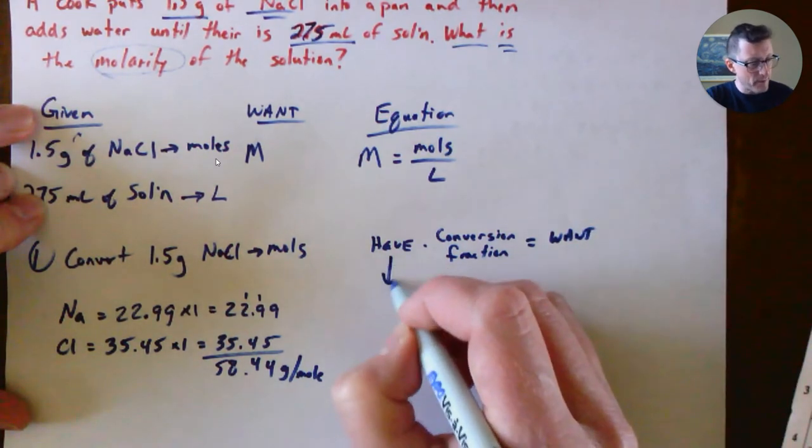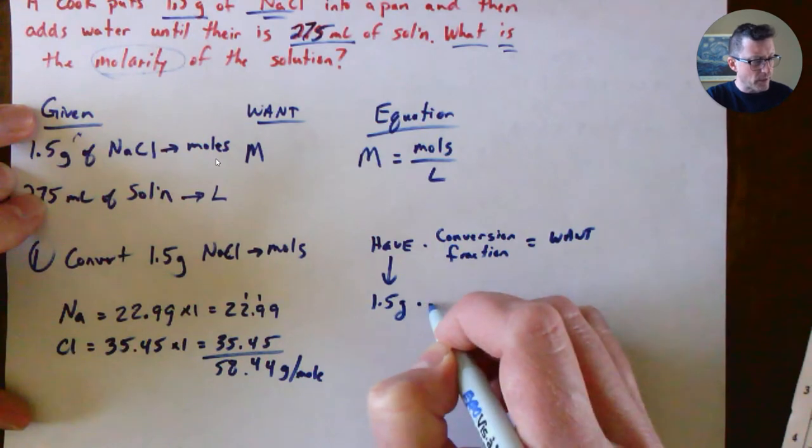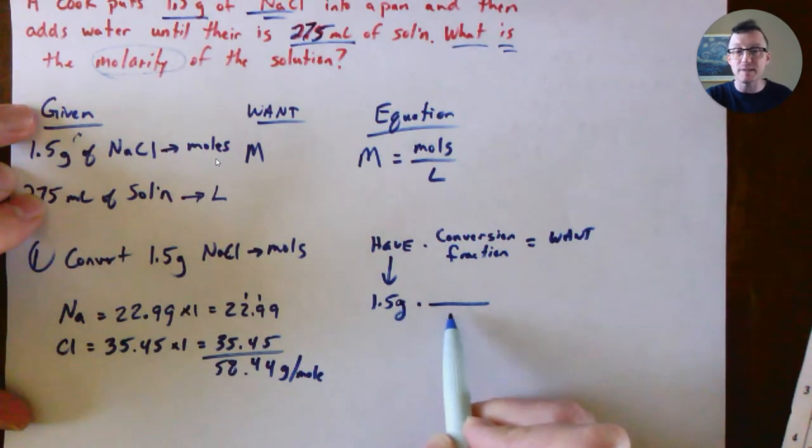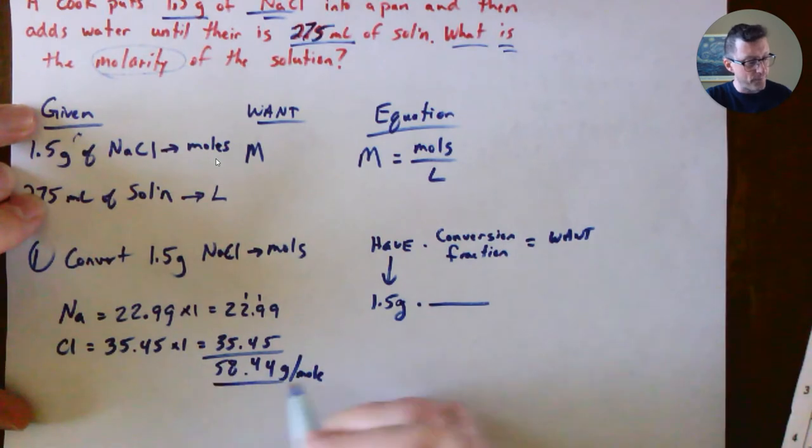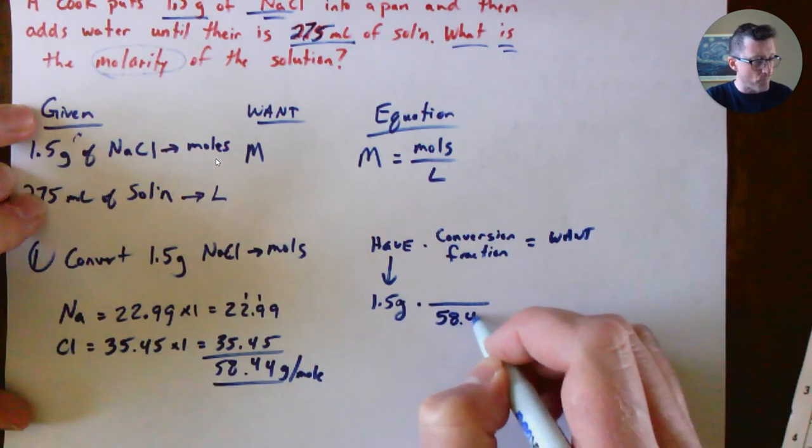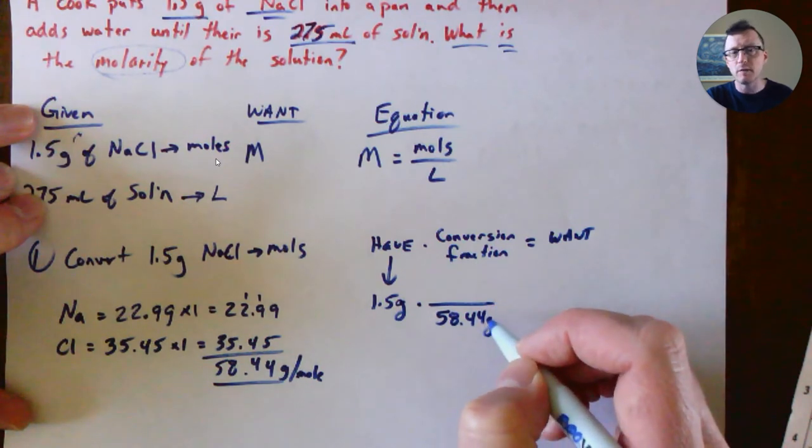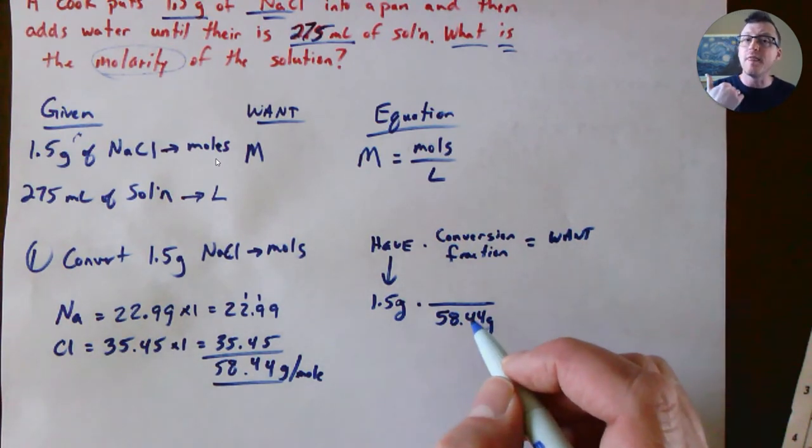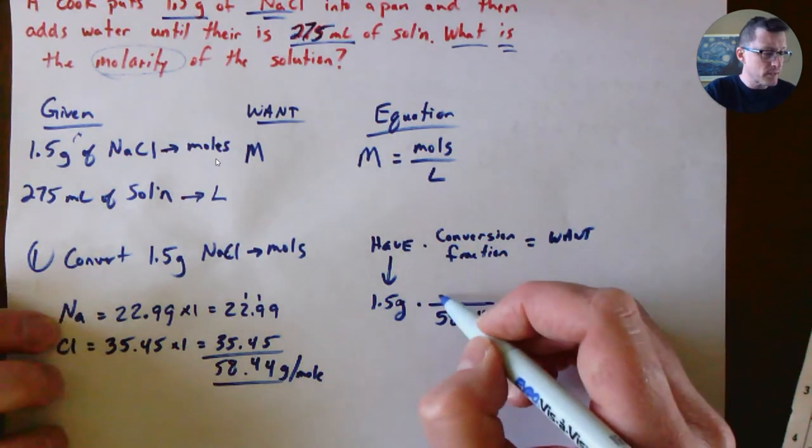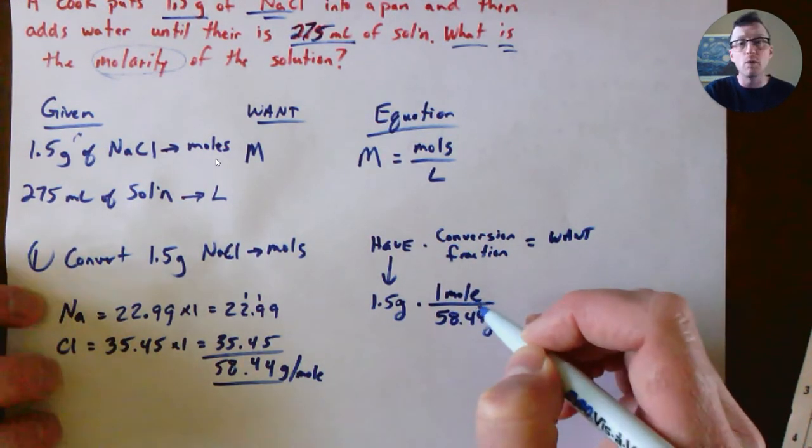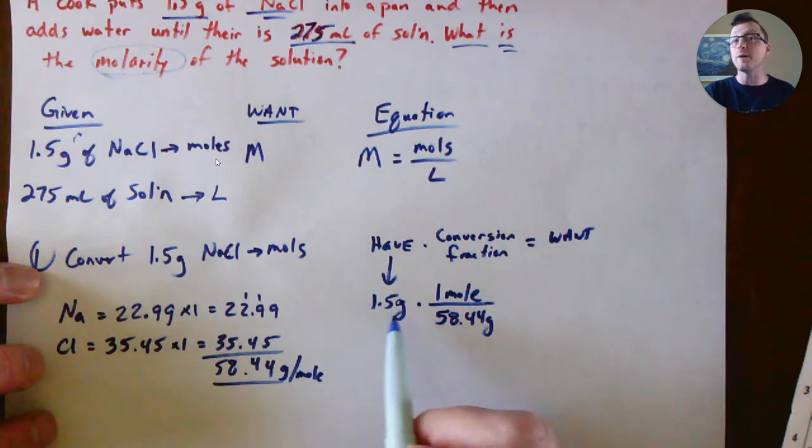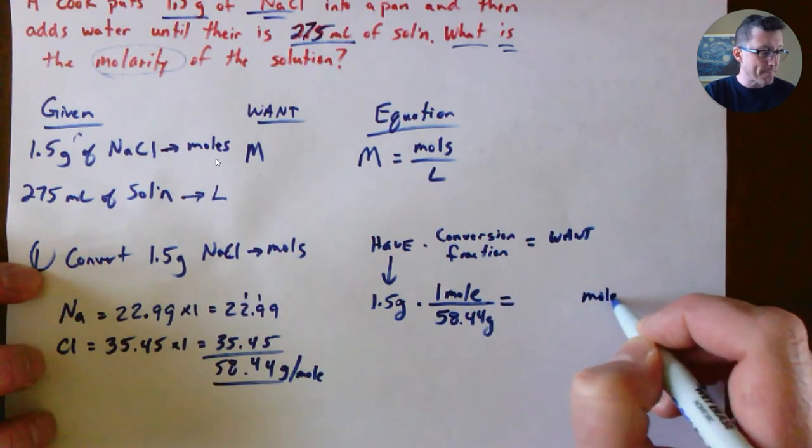We have 1.5 grams, and in a conversion fraction, you want the units to cancel, so they have to go on opposite sides. So the 58.44 grams goes on the bottom. What goes on top? What does 58.44 grams equal? That's 1 mole. This is saying if you had 1 mole of NaCl, it would weigh 58.44 grams. But if we scale down to 1.5 grams, how much of a mole do we have?